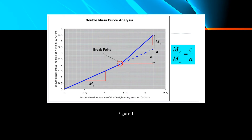Based on the image, the breakpoint is identified. Before the breakpoint, the slope is MC; after the breakpoint, the slope is MA. The slope MC is found as rise over run (Y over X), and similarly MA is Y over X for its respective segment.